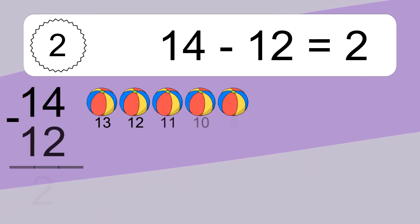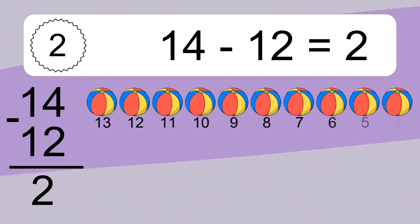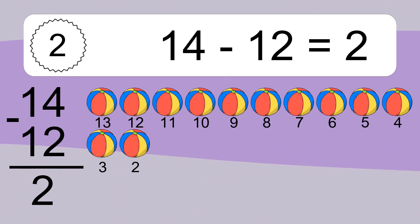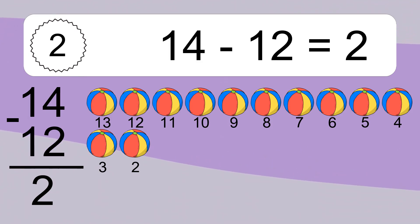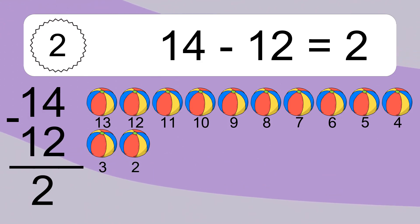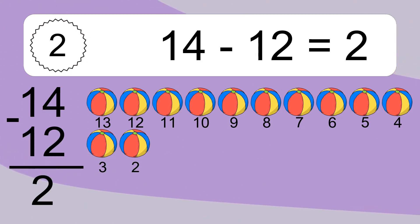14 minus 12 equals what? 14 minus 12 equals 2. Let's count it: 13, 12, 11, 10, 9, 8, 7, 6, 5, 4, 3, 2.